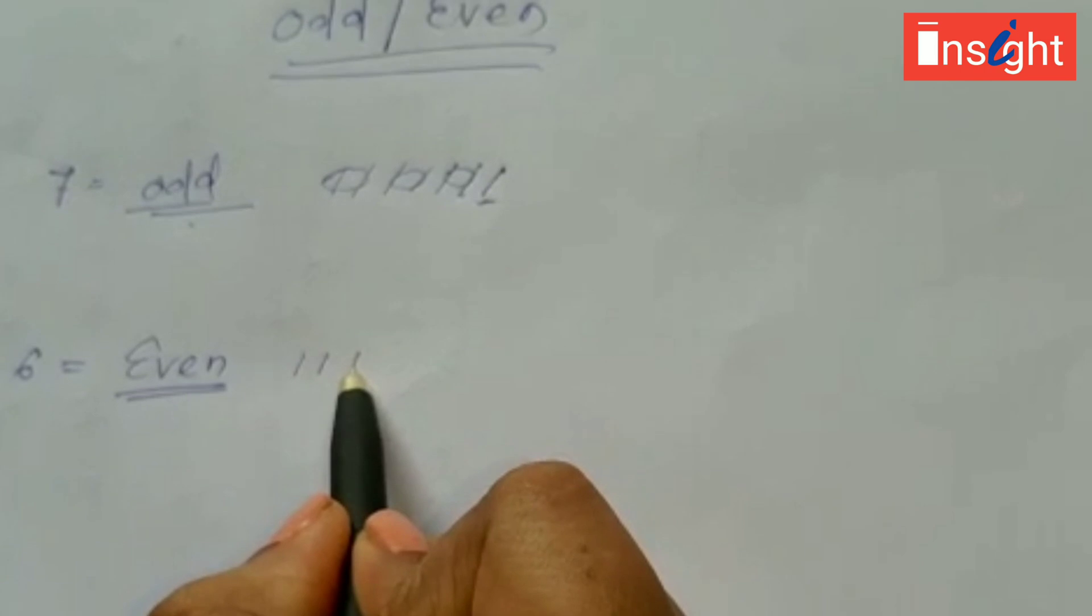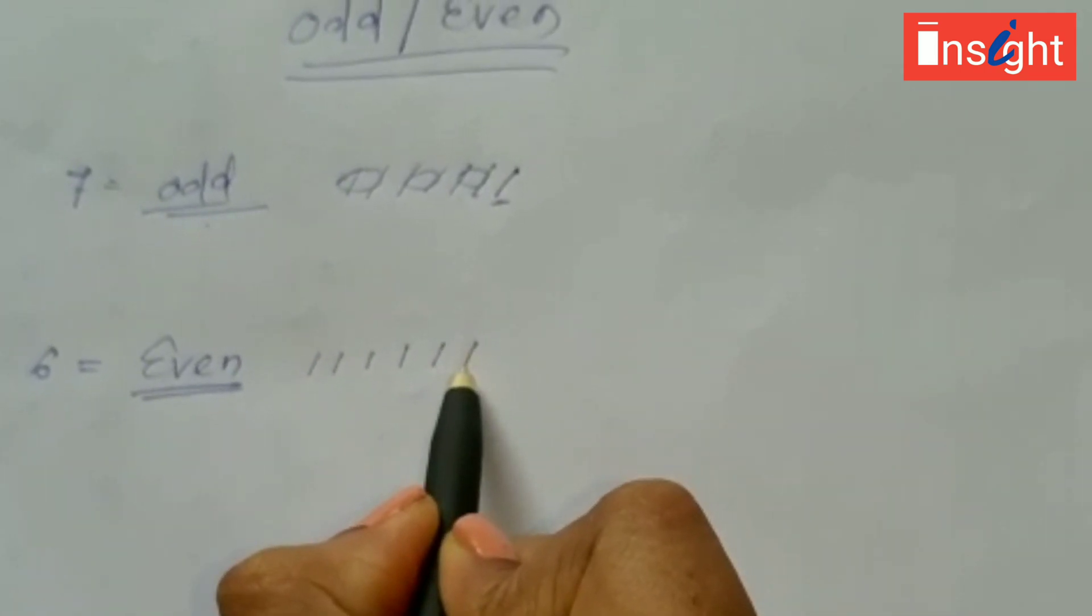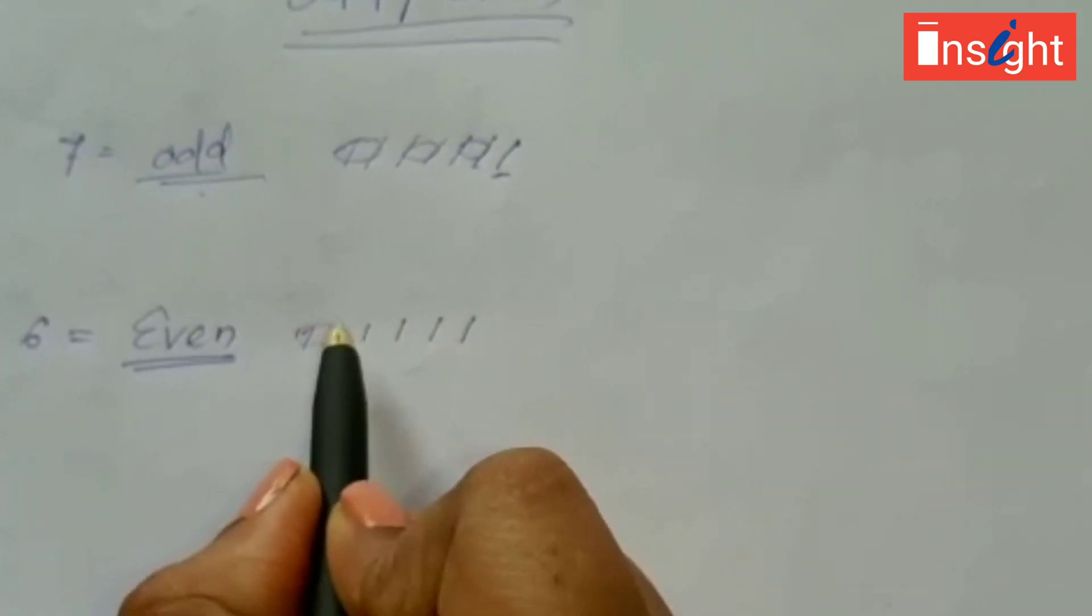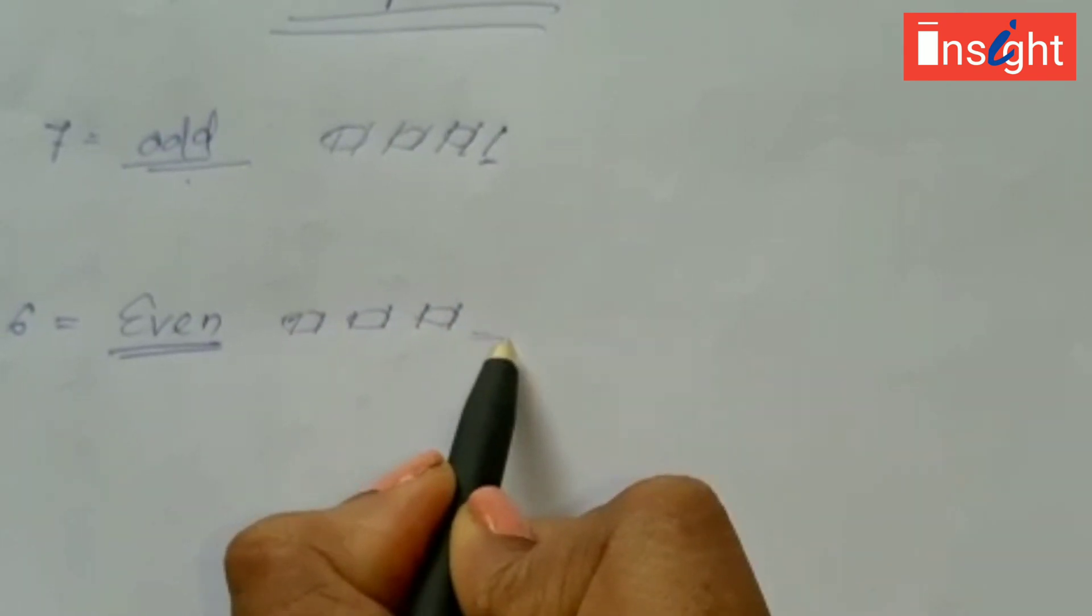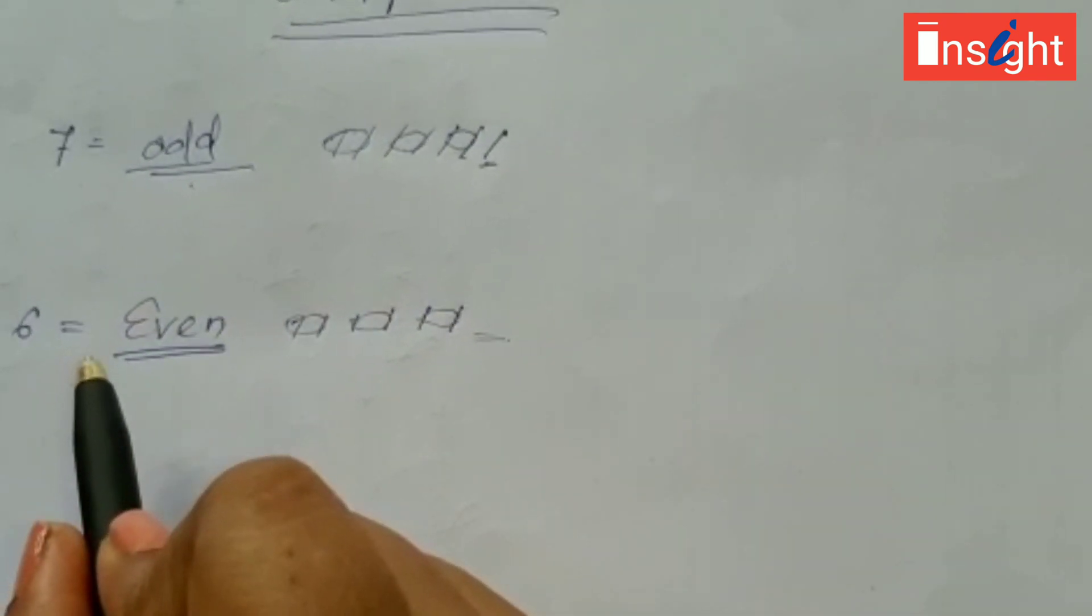Now take six lines as the number is given six here. Now again you make the pair of two. See, there is no single line left. This means it is even number.